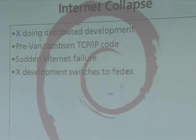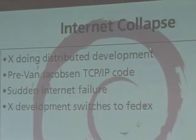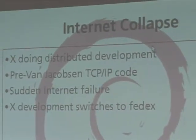One of the interesting things that happened during X development, which is very relevant to what happened politically, was the collapse of the Internet in 1987. How many of you were using the Internet in 1987? Yeah, that would be B-Dale and I.